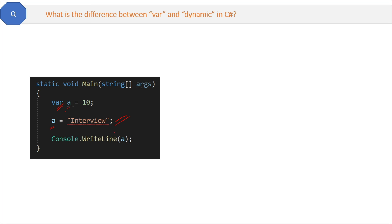Why? Because the compiler knows that a is an integer type, and assigning a string to it is not possible. So that means in case of var, the type of the variable is decided by the compiler at compile time only. You cannot reassign another type to a var variable.